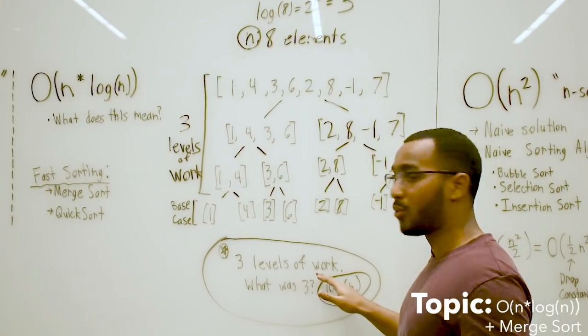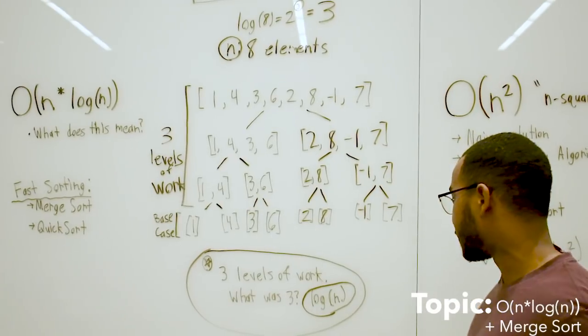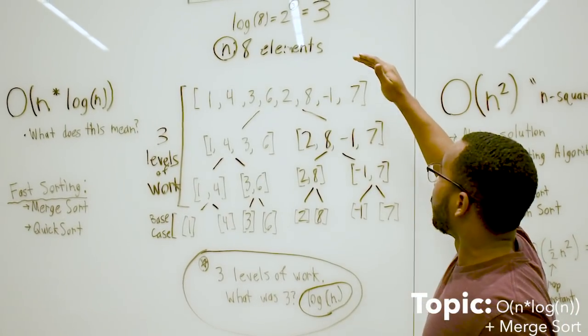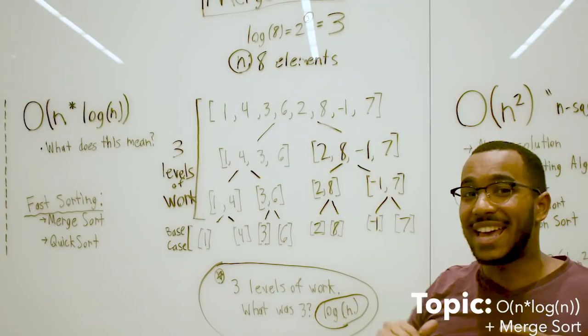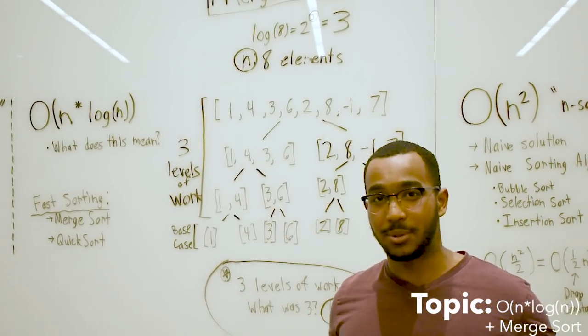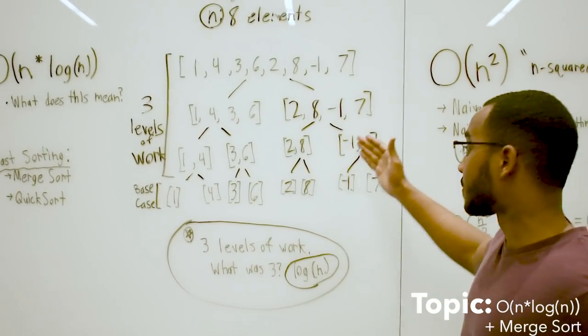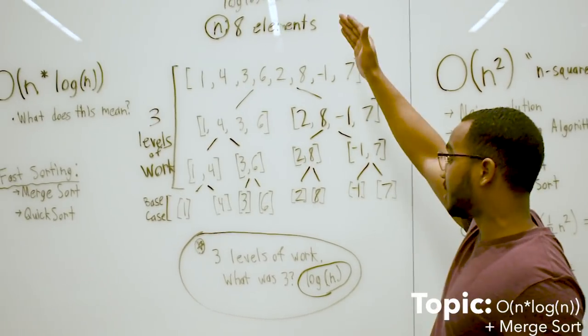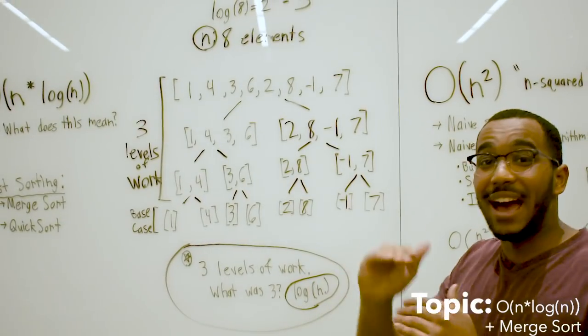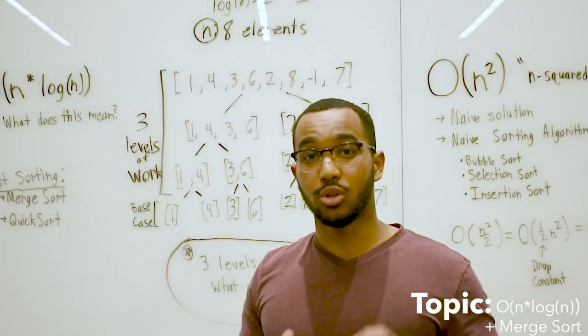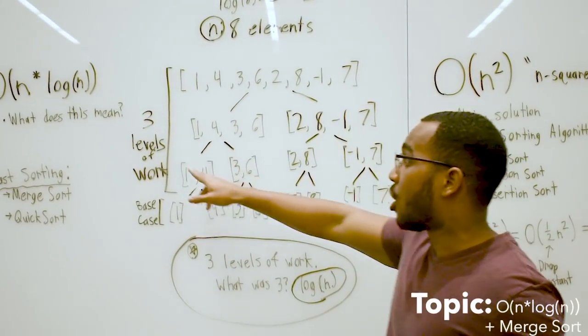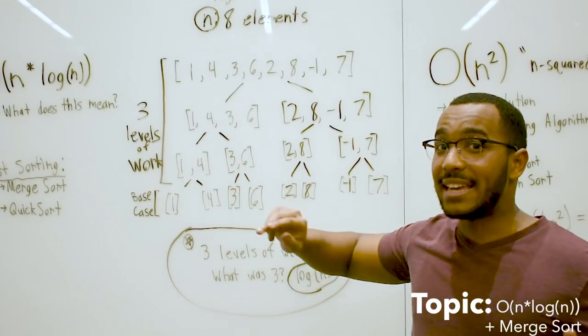We have 3 levels of work. Why is it 3? It's because we take the log of the 8 because we're doing halving steps. Just like I was saying before, the idea that we're cutting things in half is important. We are cutting things in half and we're going to have log n levels.